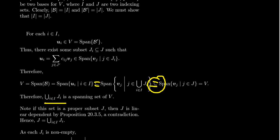But wait — J was itself a basis, hence a minimal spanning set. So is the union of J_i's not all of J?